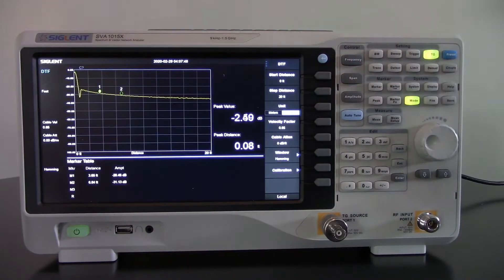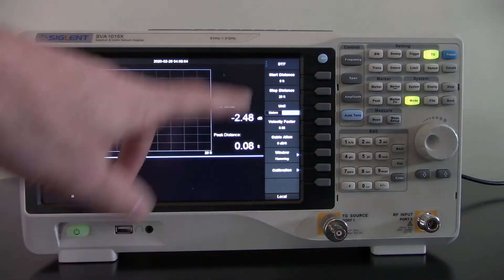Pressing mode, we're going to press distance to fault. This comes as a trial option on every SVA. You get over 100 hours of the feature. And if you would like to permanently activate it, from your local Siglent distributor or your Siglent office, order the license key, enter that, and you'll be all set.